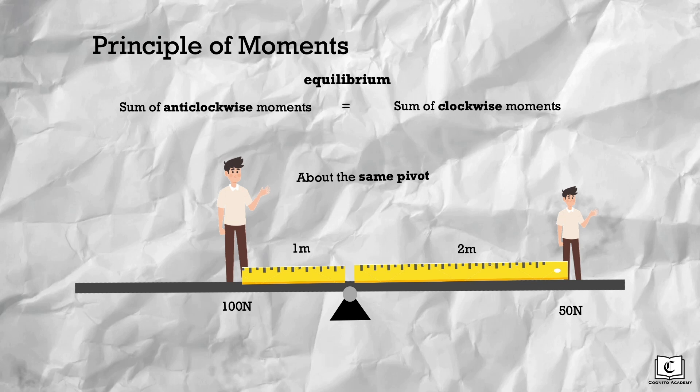So first, let's calculate the anticlockwise moment caused by big Jill. We take big Jill's weight, which is 100 newtons, multiplied by his perpendicular distance from the pivot, which is 1 meter.